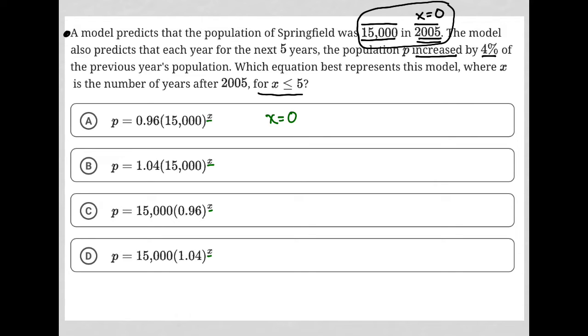What does it mean that X is 0? Well, we already mentioned it - it means we're in the year 2005. What do we know about 2005? The population should be 15,000. So when I put 0 for X, I should get P = 15,000.